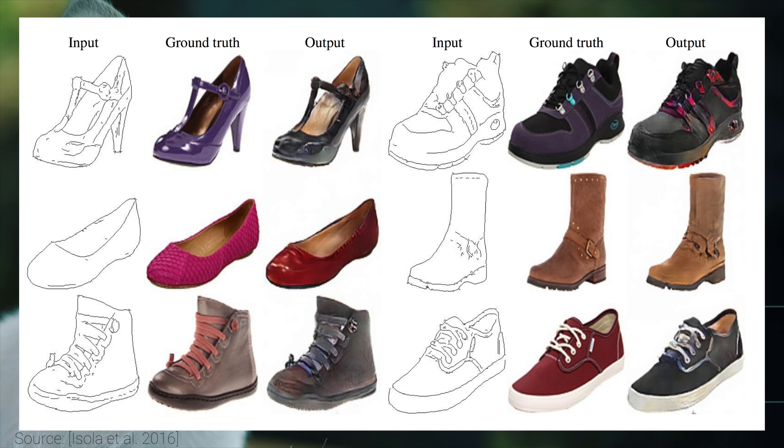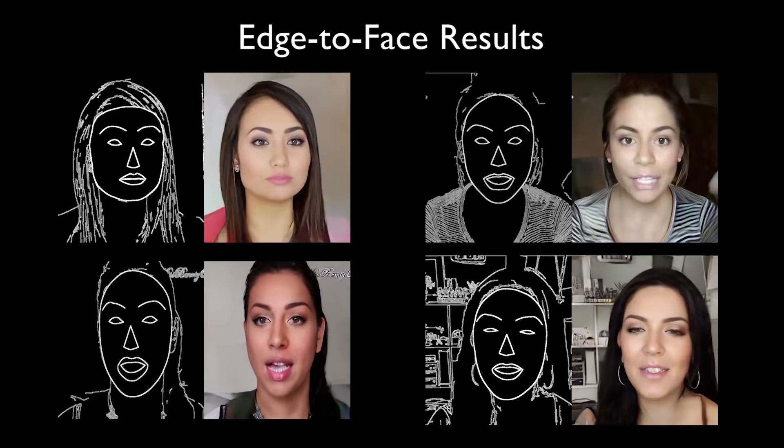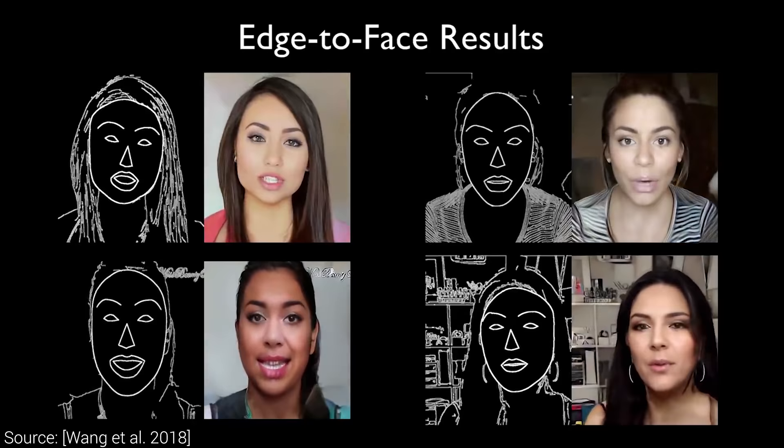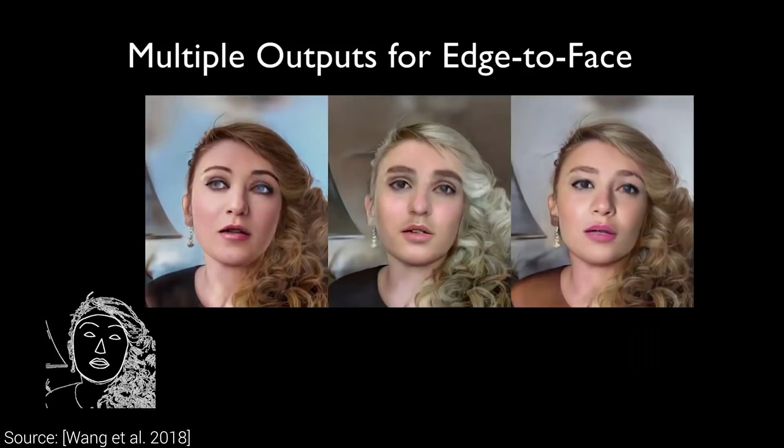But this new algorithm takes it up a notch and transforms these edge maps into human faces — not only that, but it also animates them in time. As you see here, it also takes into consideration the fact that the same edges may result in many different faces, and therefore it is also willing to give us more of these options.